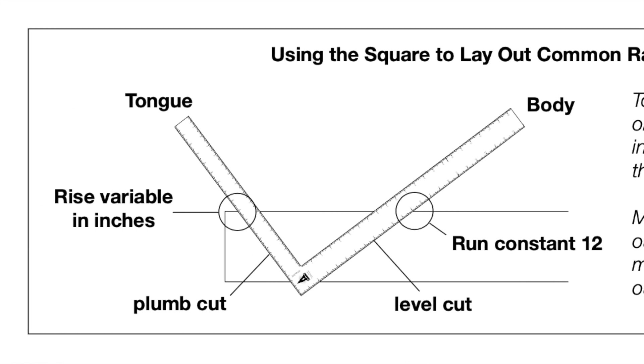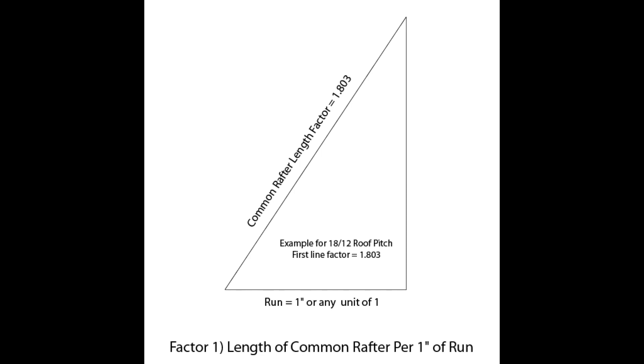As we move down the row we find this ratio changes corresponding to the given inches of rise per foot of run. Multiplying the specified rafter run by 1.803 results in the length of the common rafter for an 18 over 12 pitch.